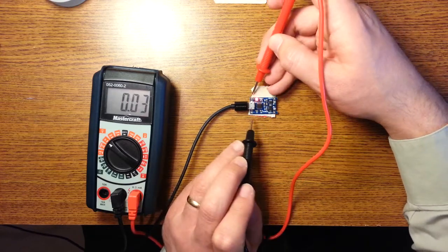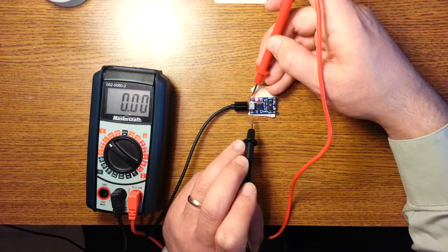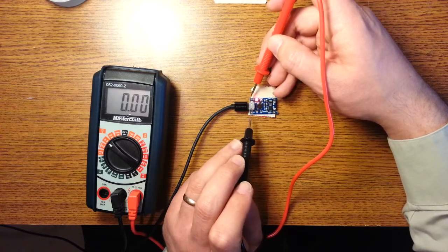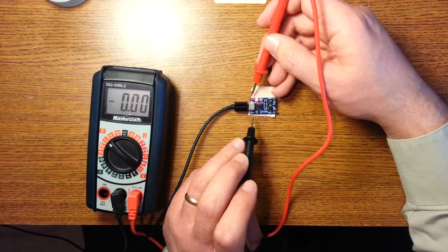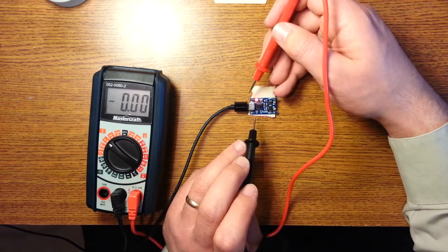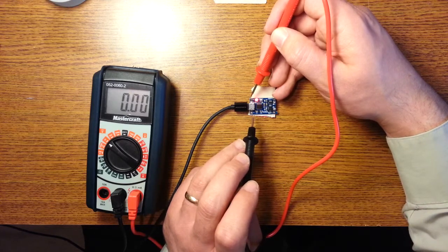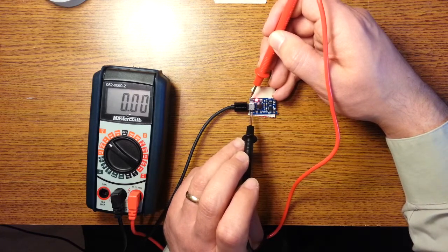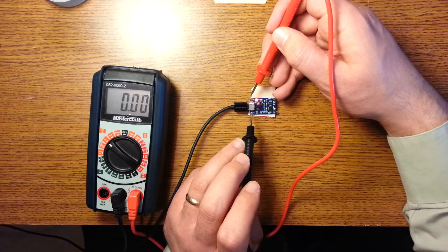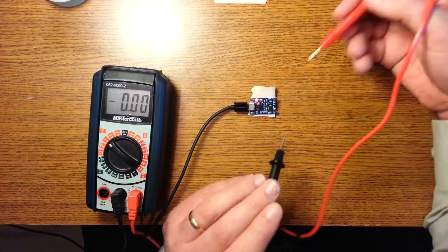Now you can solder a permanent connected power source to this if you wanted to, or if you were going to use a different power source, say from a leftover AC-DC power adapter, you could attach the appropriate connector to this to receive the plug from said adapter.